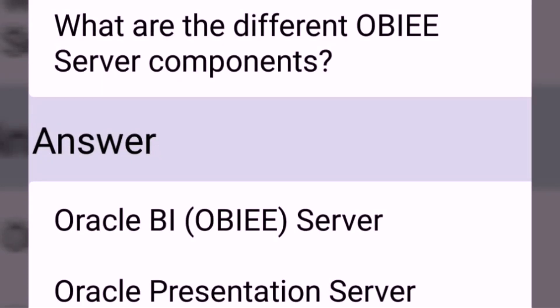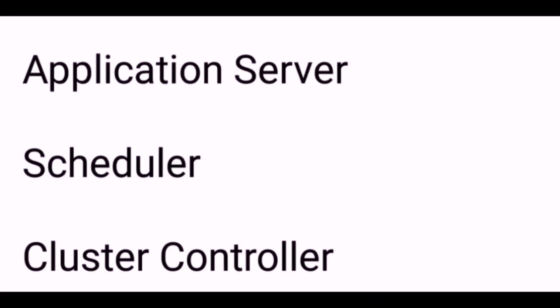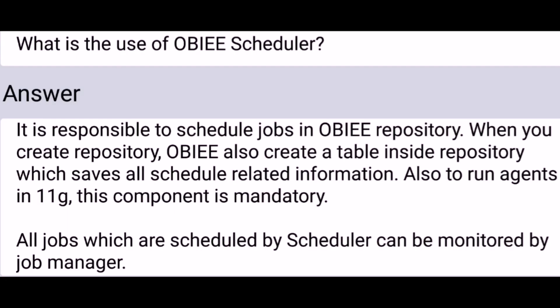What are the different OBIEE server components? What is the use of the OBIEE scheduler? It is responsible for scheduling jobs in the OBIEE repository. When you create a repository, OBIEE also creates a table inside the repository which saves all schedule-related information. Also, to run agents in 11G, this component is mandatory. All jobs scheduled by the scheduler can be monitored by the job manager.